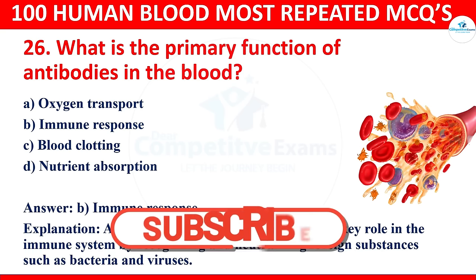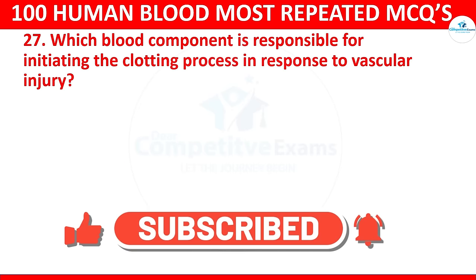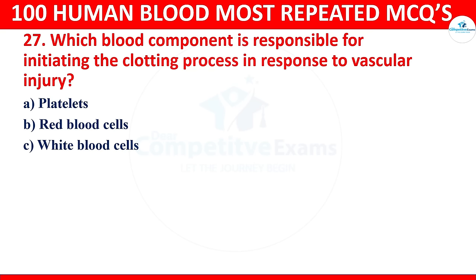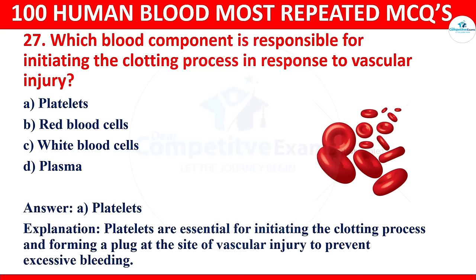Question 27: Which blood component is responsible for initiating the clotting process in response to vascular injury? Options: platelets, red blood cells, white blood cells, or plasma. The correct answer is platelets. Platelets are essential for initiating the clotting process and forming a plug at the site of vascular injury to prevent excessive bleeding.